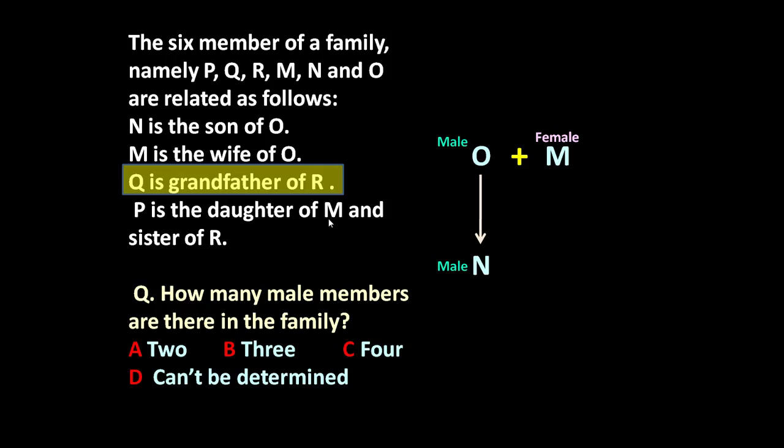Next statement is P is the daughter of M and sister of R. So P is daughter of M. M is here, P is daughter of M, it means P is female and sister of R. One more member is there, R. So P is sister of R.